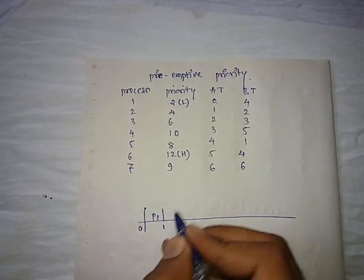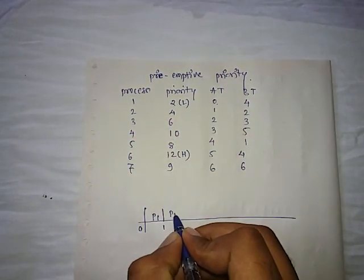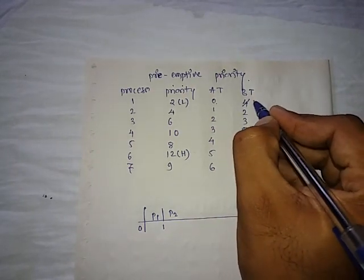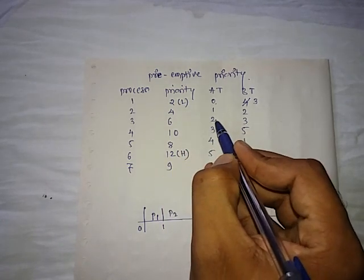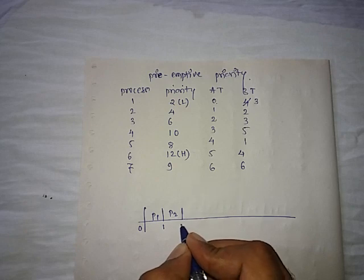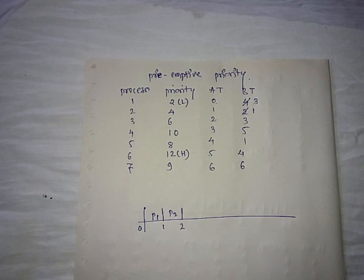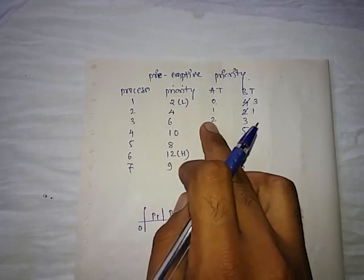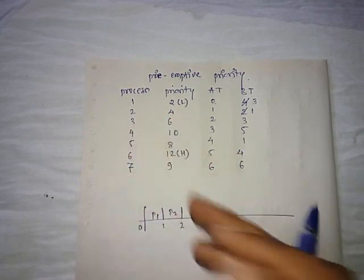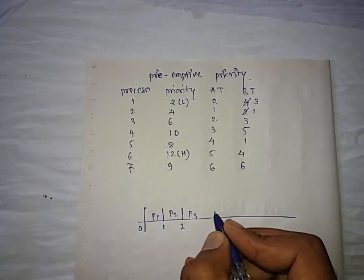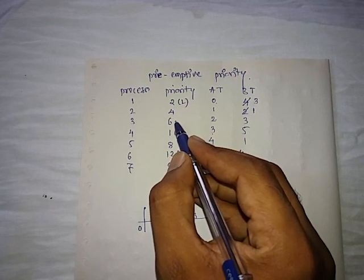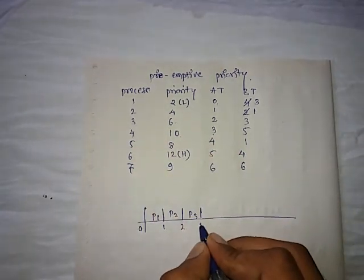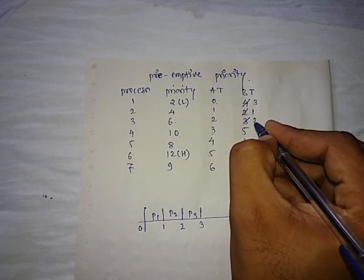We stop P1 and schedule the new process P2. Since we completed P1 by time 1, P1's remaining burst time becomes 3. Now check how long to schedule P2 — the next job arrives at time 2. So we schedule P2 for only 1 time unit: 1 plus 1 becomes 2, and P2's burst time is reduced by 1. The new process arriving at time 2 has priority 6, which is higher, so we schedule P3. The next job arrives at time 3 with highest priority, so we stop P3 and start P4. P3's remaining time becomes 2.